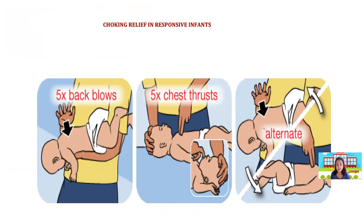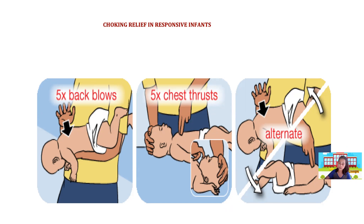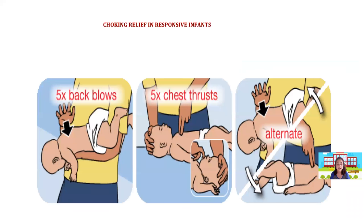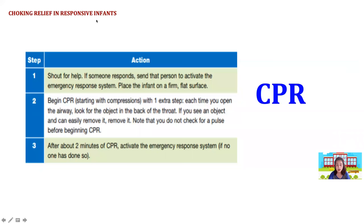For a responsive infant who is choking, perform five back blows — strike the shoulder blade area — then position the patient and give five chest thrusts. If the infant becomes unresponsive, proceed to CPR.